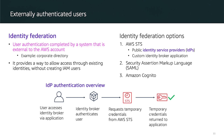For externally authenticated users, you can use identity federation. AWS supports identity federation for delegated access to the AWS Management Console or API. External identities are granted secure access to resources in your AWS account without needing to create an IAM user. Identity federation can be accomplished in one of three ways: using a corporate Microsoft Active Directory or a custom identity broker application using AWS STS; using Security Assertion Markup Language (SAML); or using web identity providers such as Amazon Cognito, Facebook, Microsoft, or Google.